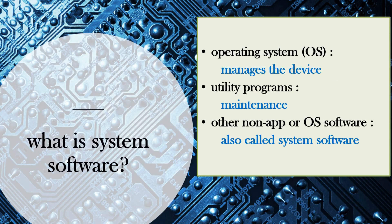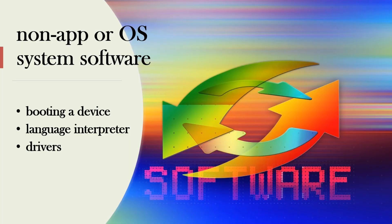So what is system software? The major part is the operating system, and that manages the device — it could be your phone, your computer, your laptop. There are also utility programs to help maintain your device, and other programs that are not the operating system and not really apps. When you boot a device you load the operating system, but there are some stages before that. We'll also look at language interpreters and drivers.